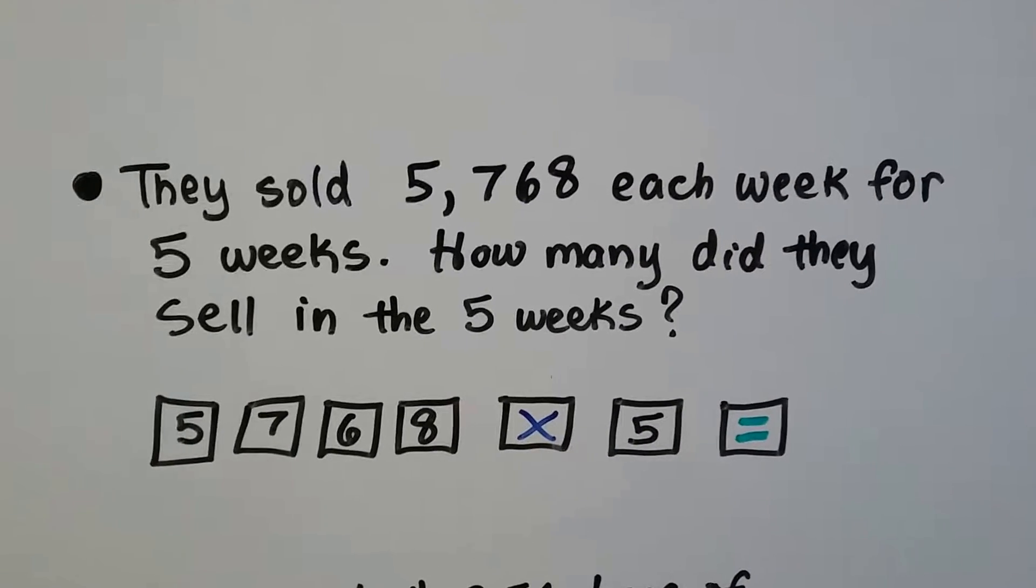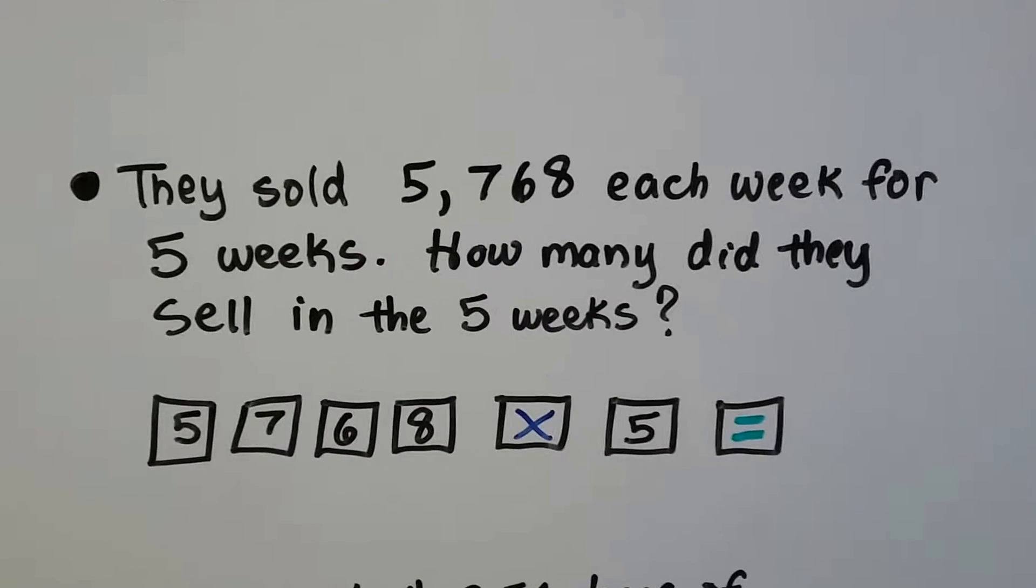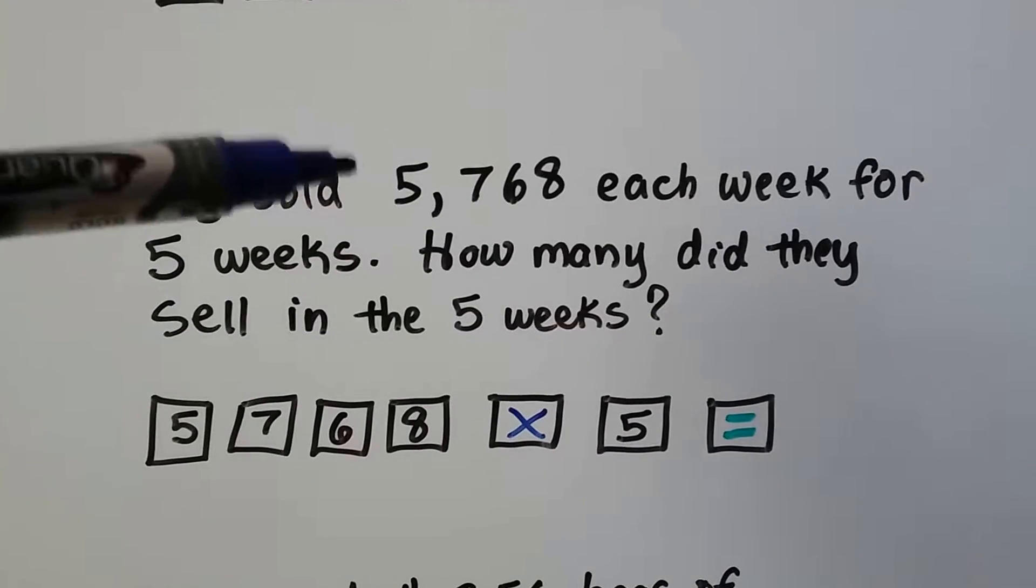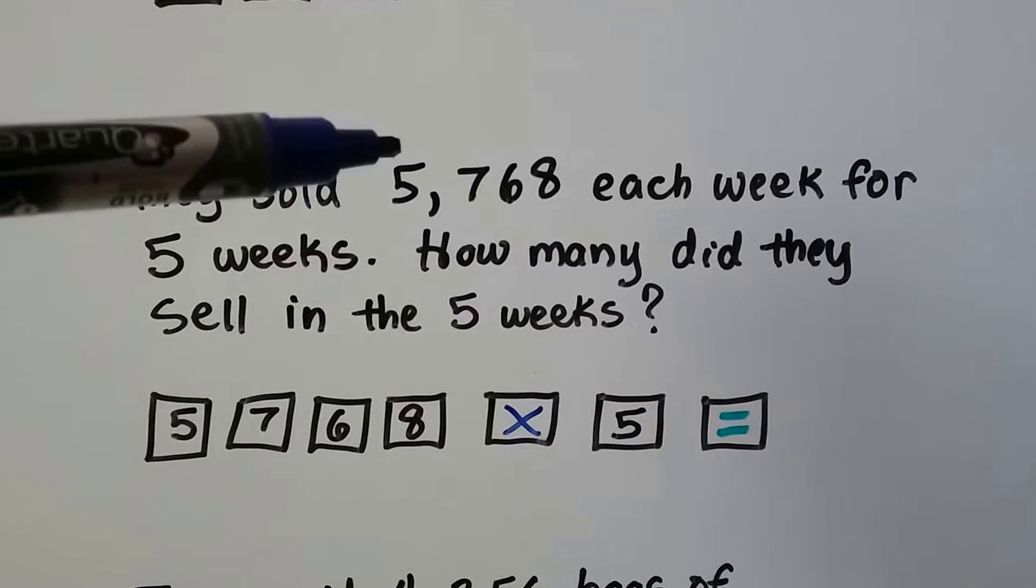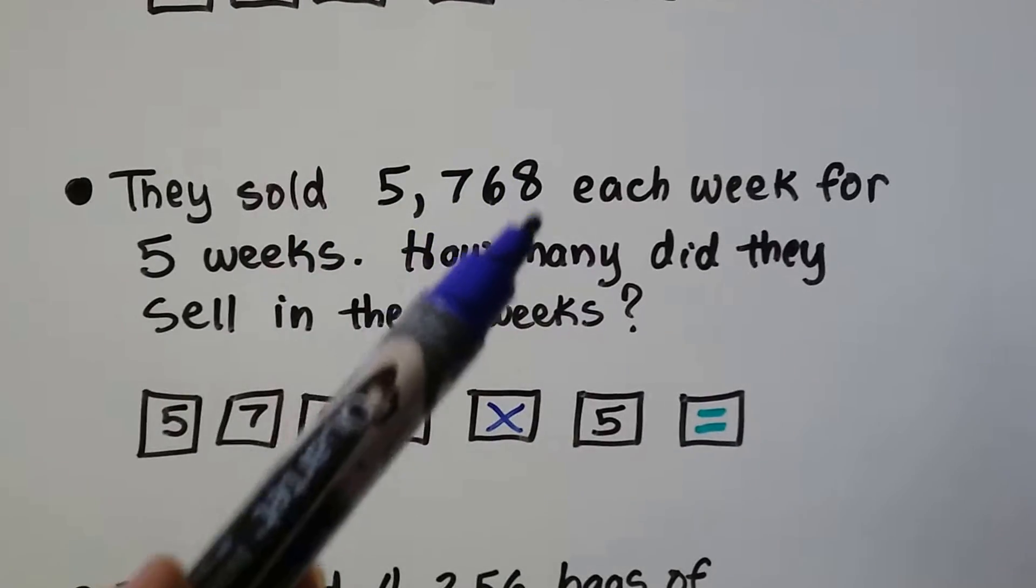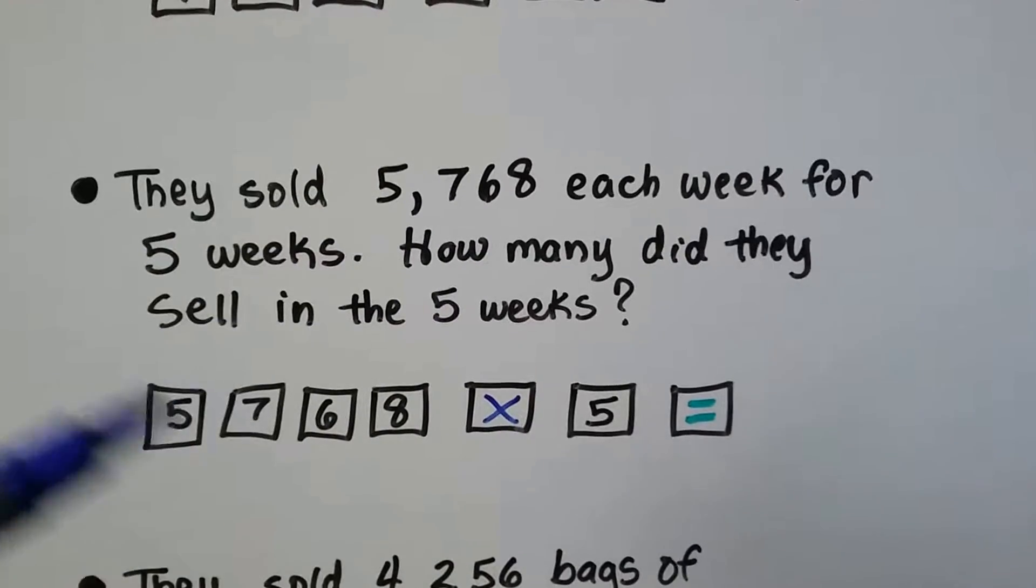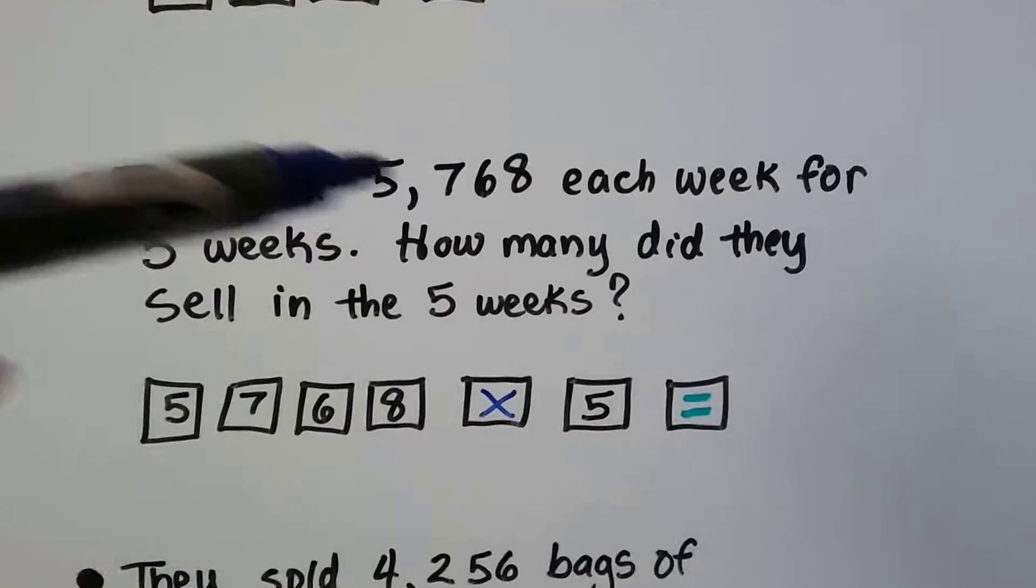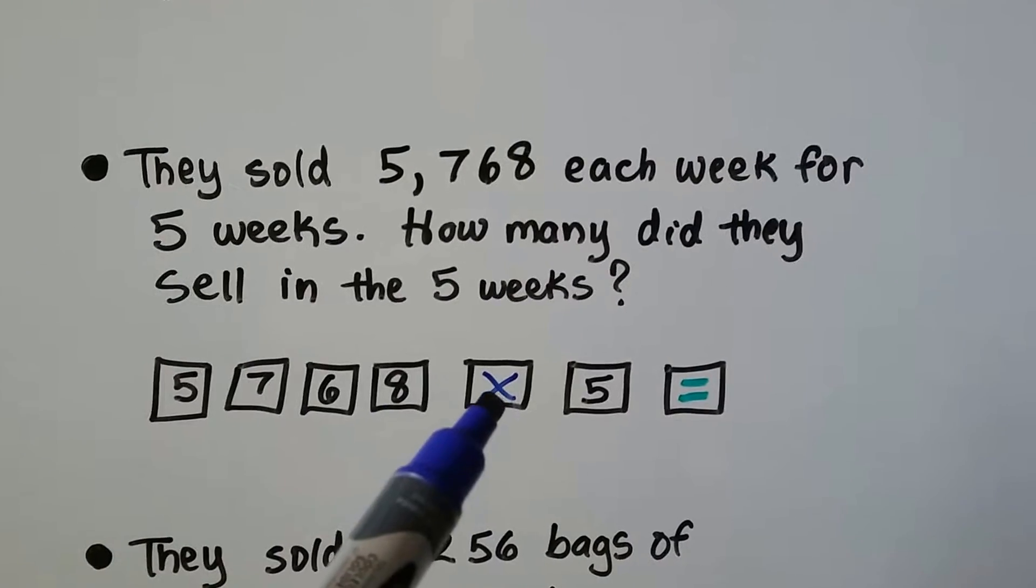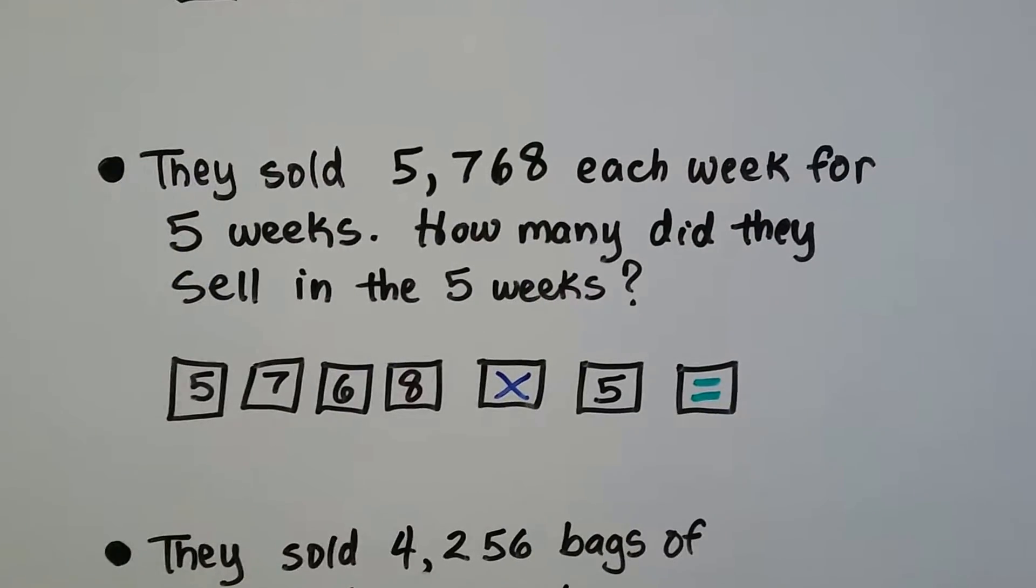They sold 5,768 each week for five weeks. How many did they sell in five weeks? Well, we're combining equal groups. It's this amount for five weeks. So you could do 5,768 plus itself five times. Just keep adding this number five times. You could do that, or you could just multiply it by five. We put in the five, then the seven, then the six, then the eight, then hit the multiplication key, then the five for the five weeks, and then the equals sign, and it'll give us our product.